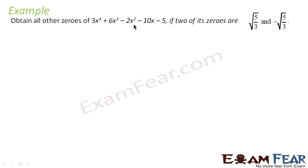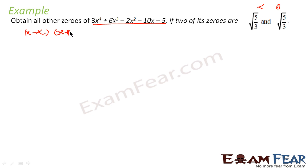We have to obtain all other zeros of this polynomial of degree 4, where two of the zeros are √(5/3) and −√(5/3). We know that if these are zeros of this function — let's call them alpha and beta — then (x − alpha)(x − beta) should divide this polynomial, because alpha and beta are zeros of the function.